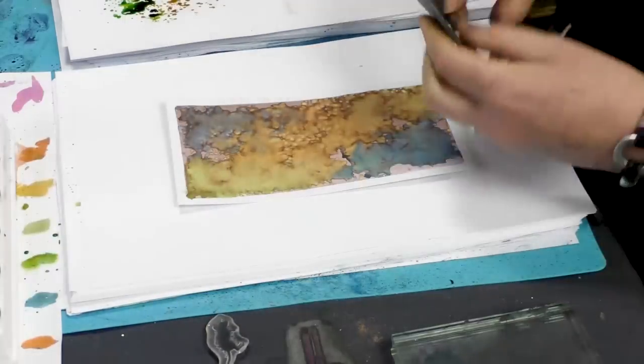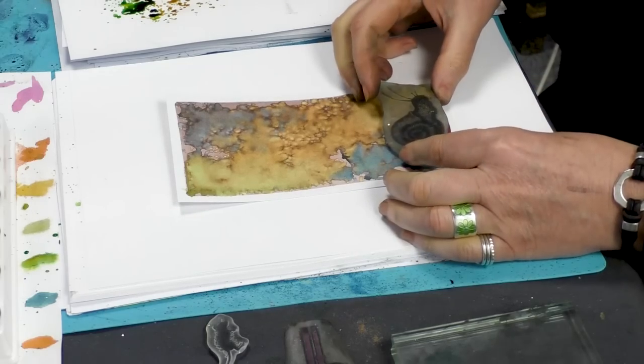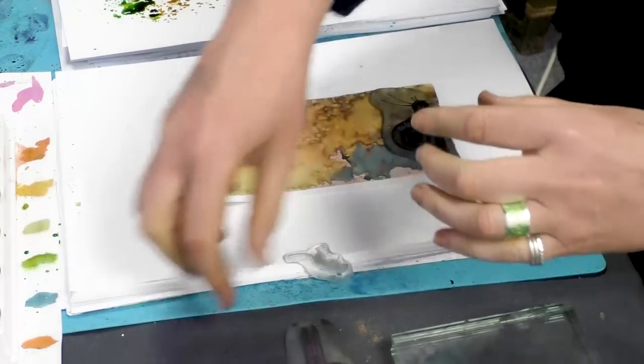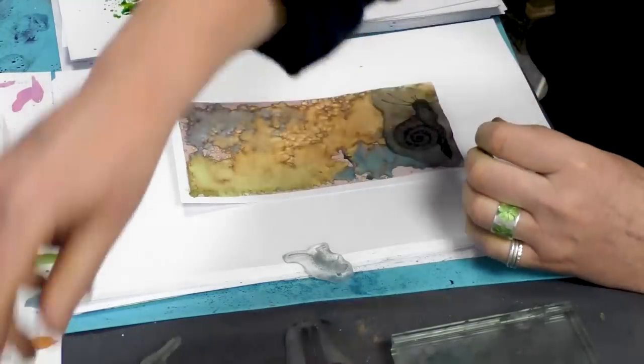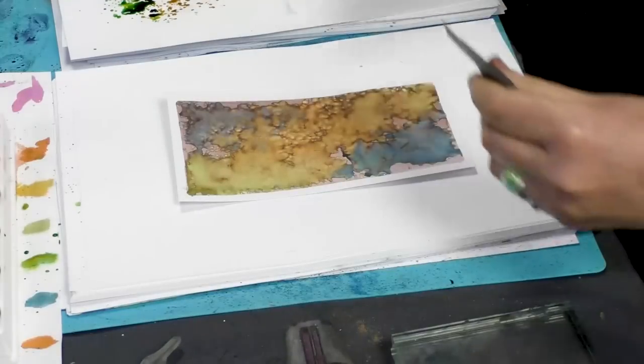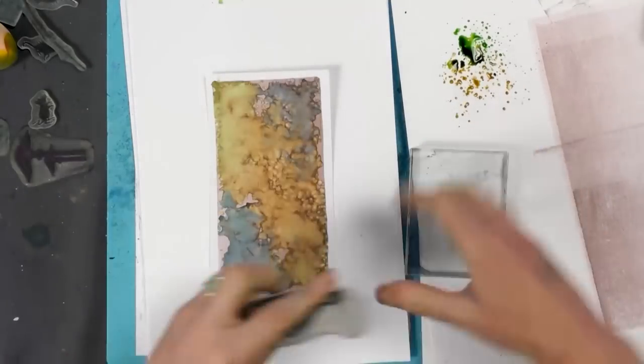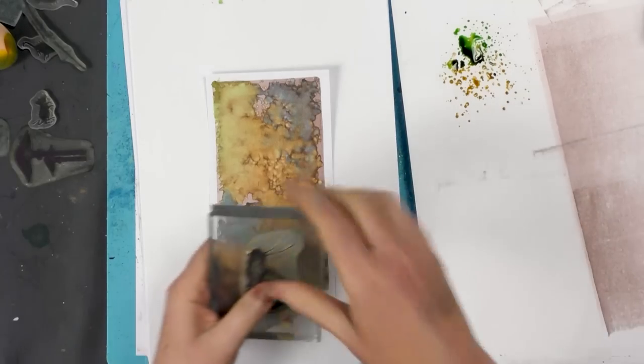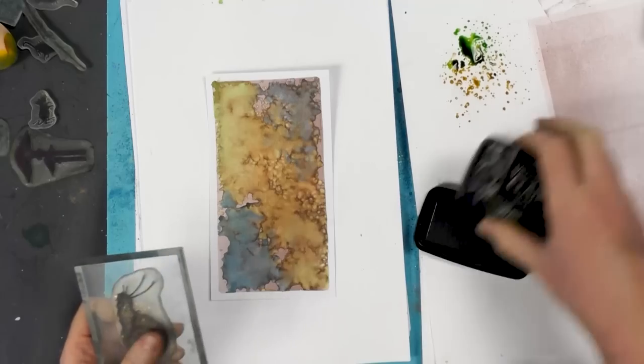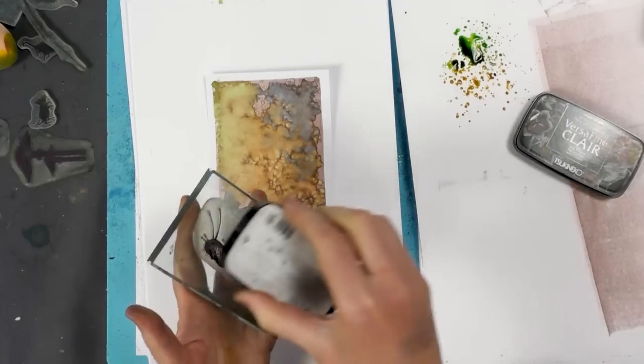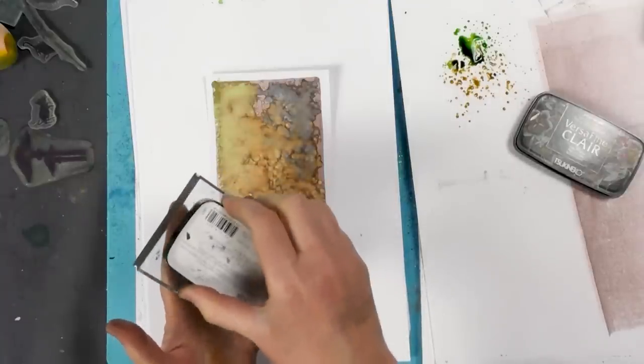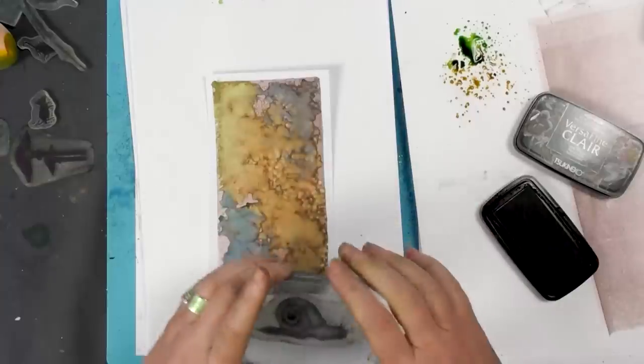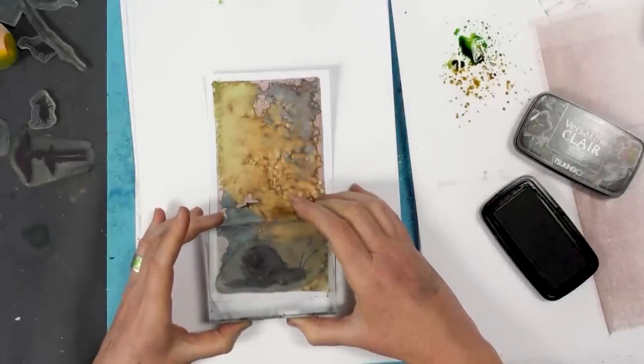So I've picked a few stamps here. I'm just going to check out my composition. I think we're good to go on those. So, grab my block, got my snail, and I'm going to ink up in the Nocturne. Make sure he's completely covered.